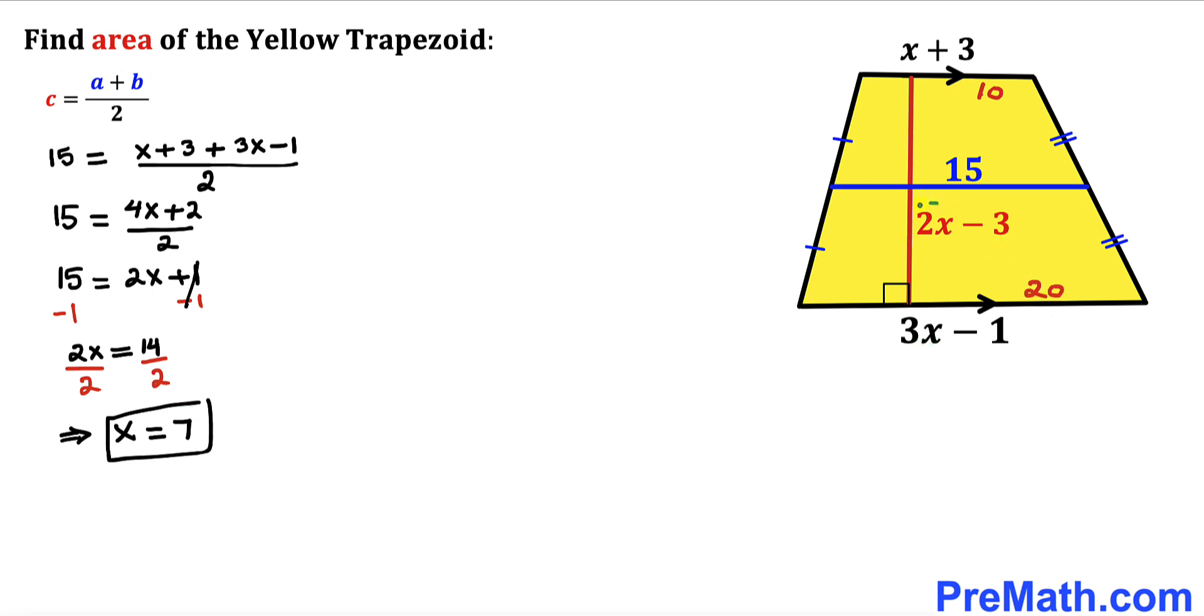And now let's focus on this height 2x minus 3. I'm going to replace this x by 7 as well. So 2 times 7 is going to be 14. Take away 3. That is going to give us 11 as our height. So thus our height turns out to be 11 units.